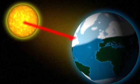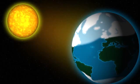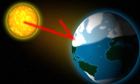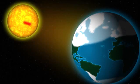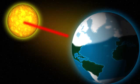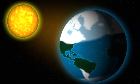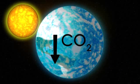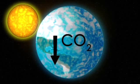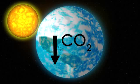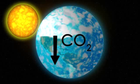As glacial ice spreads, snow and ice reflect sunlight that would otherwise warm the Earth, causing further drops in cold temperatures. Low levels of carbon dioxide in the atmosphere can also contribute to a glacial age.